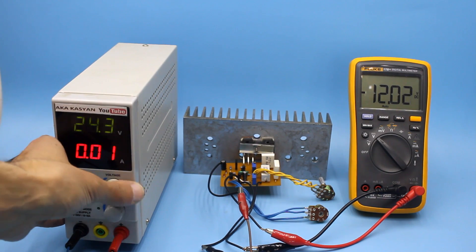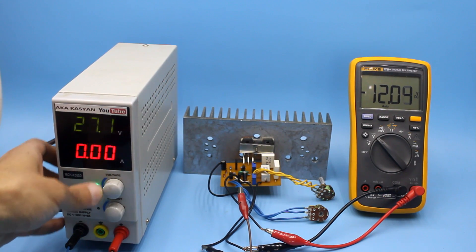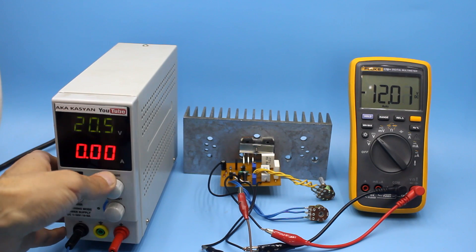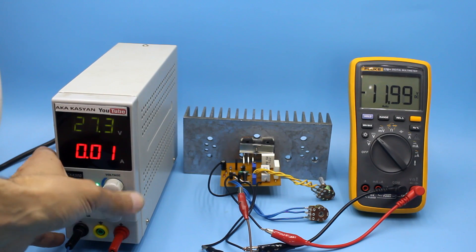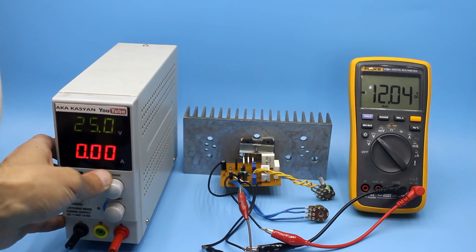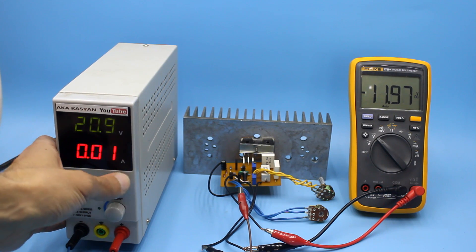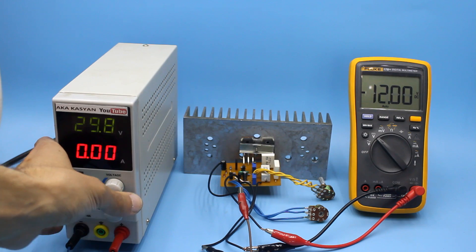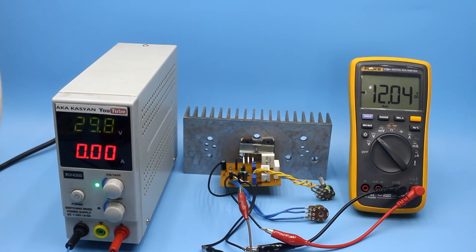Let's check the stability of the output voltage for sudden changes in the input voltage, for example, drops in the mains. As you can see, the stabilizer is holding good. If changing the input voltage by 10 volts, the output changes only by 50 to 70 millivolts.